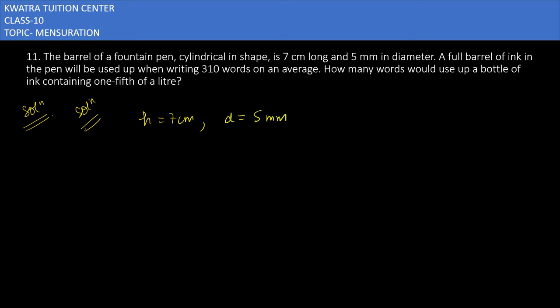Convert mm into cm first, so it will give you 0.5 cm. They are saying a full barrel can be used for writing 310 words on average, so first we have to find the volume.